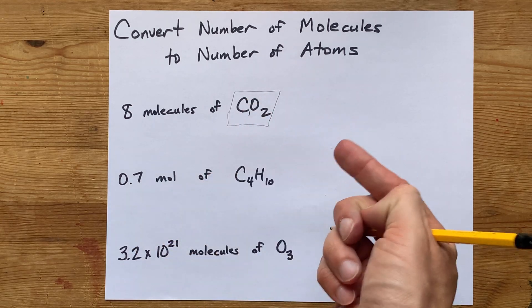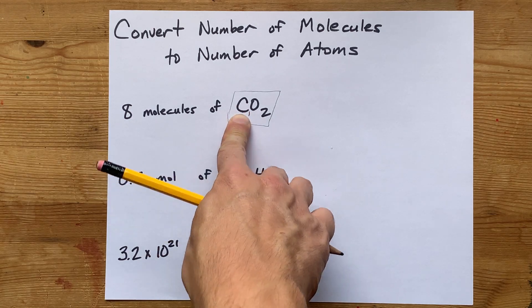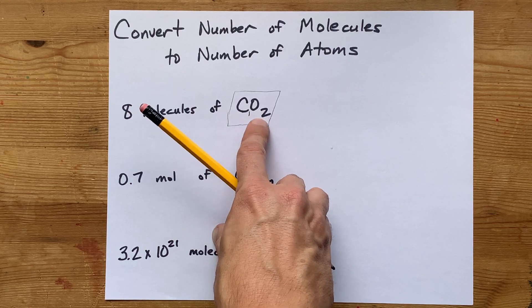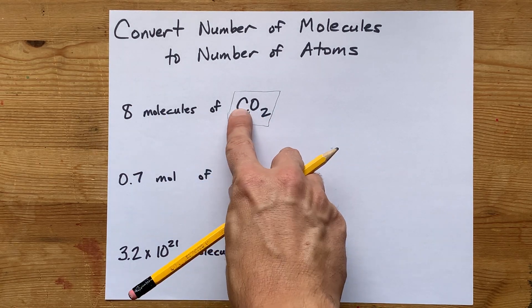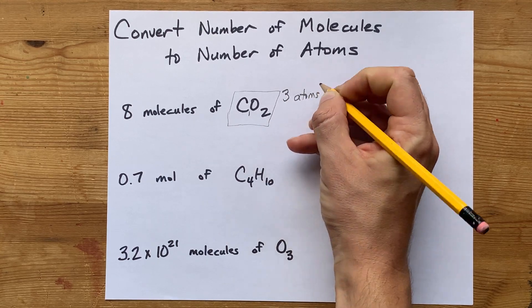And if there was less than one, there'd be none, and why would you write it there? So there is one carbon there, and then this O, oxygen, has two. There's two of them because there's a little subscript two there. One carbon and two oxygens is three atoms in that molecule.